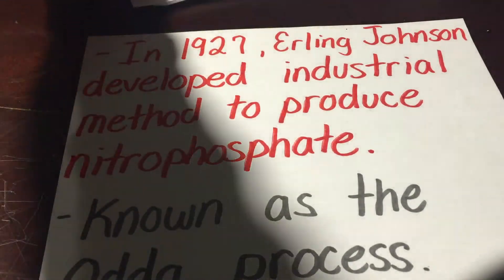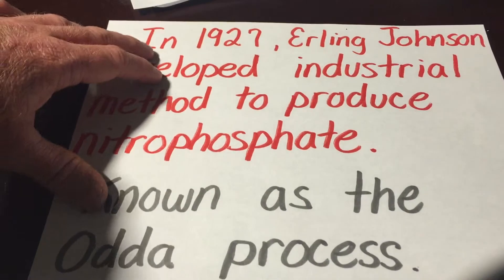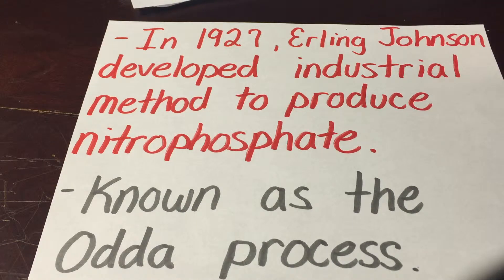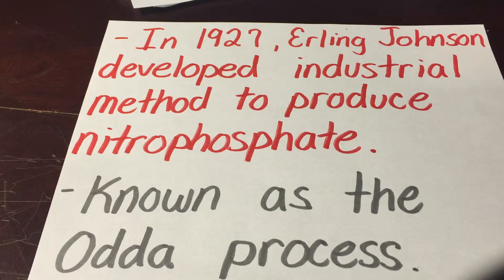In 1927, Erling Johnson developed an industrial method to produce nitric phosphate, known as the Odda process. It acidified phosphate rock from the southern Pacific Ocean with nitric acid to produce phosphoric acid. Once neutralized, it could be used as a nitrogen fertilizer.